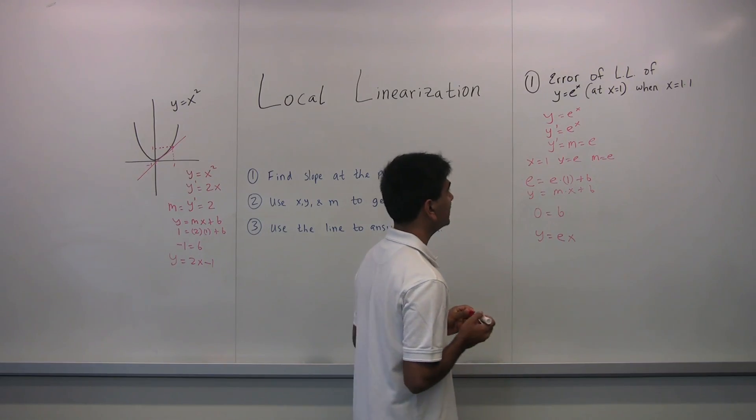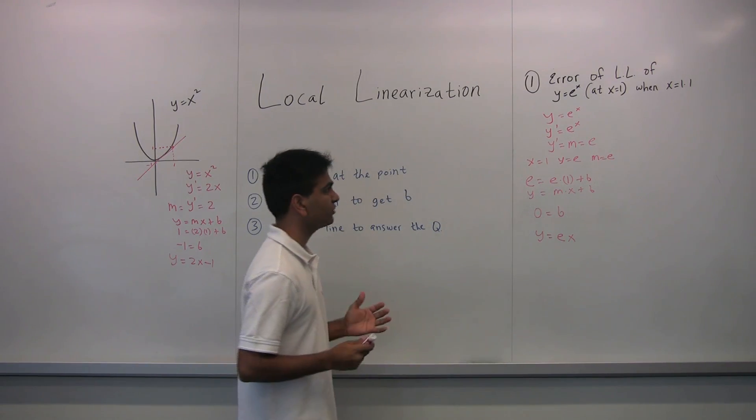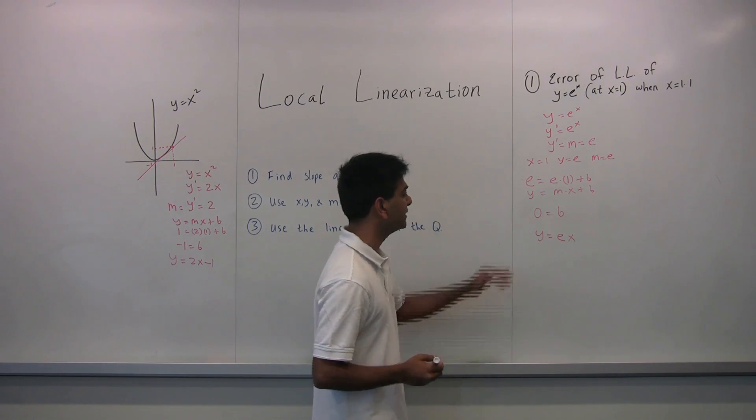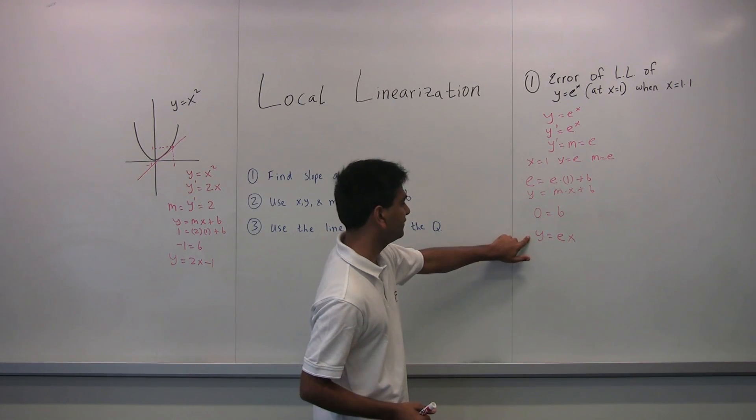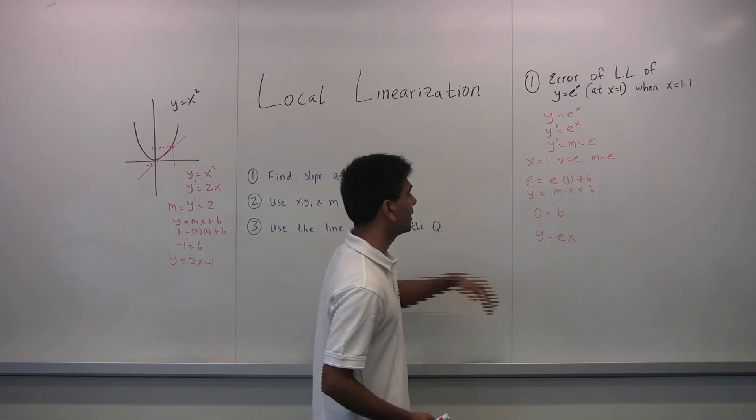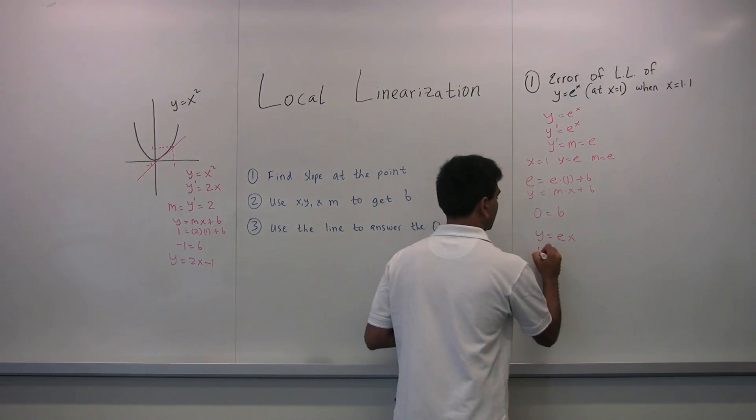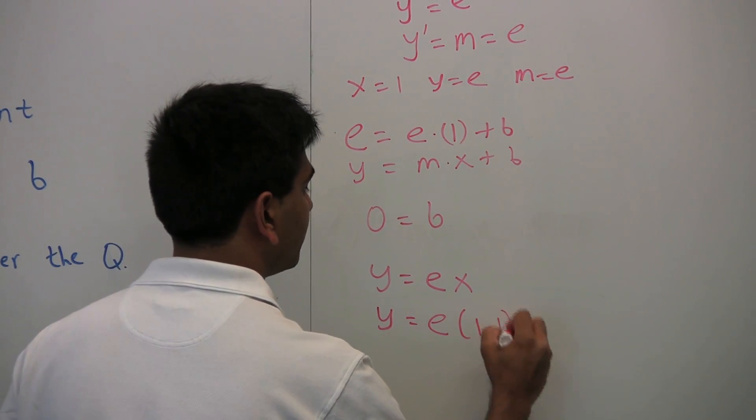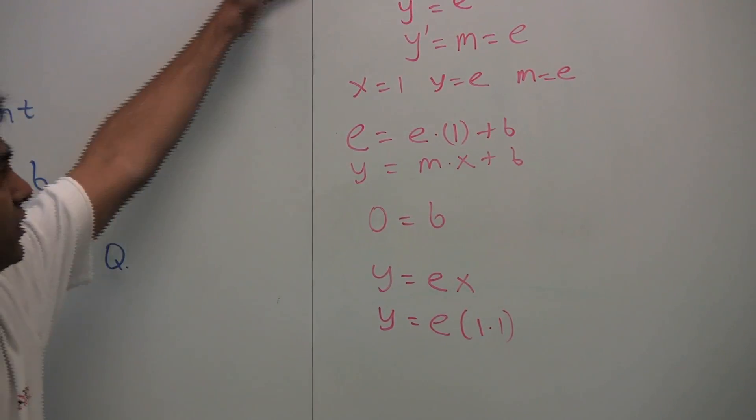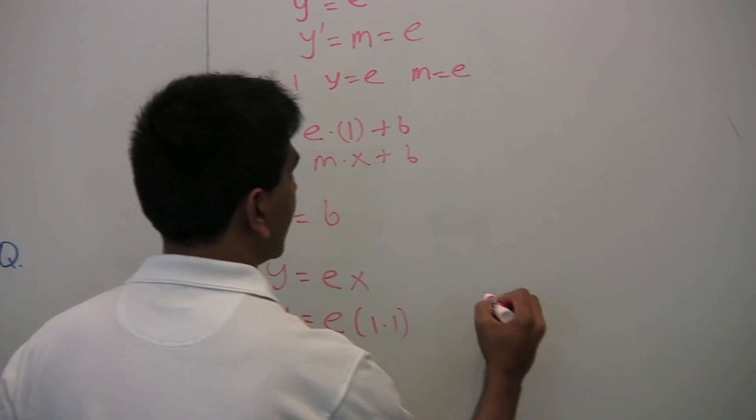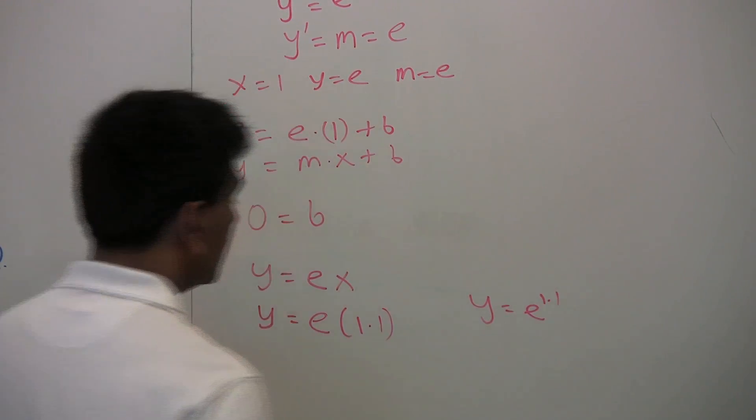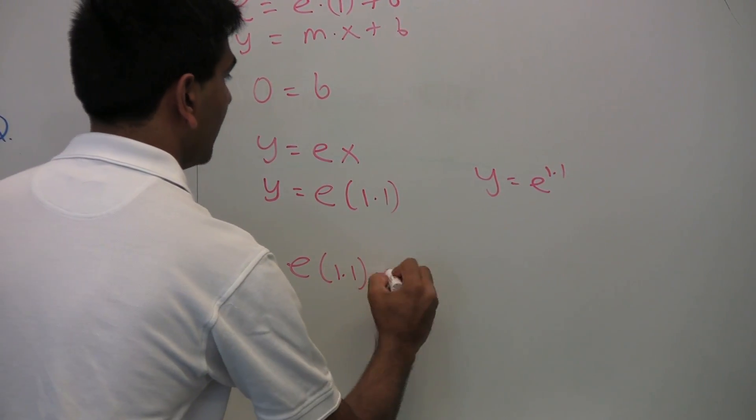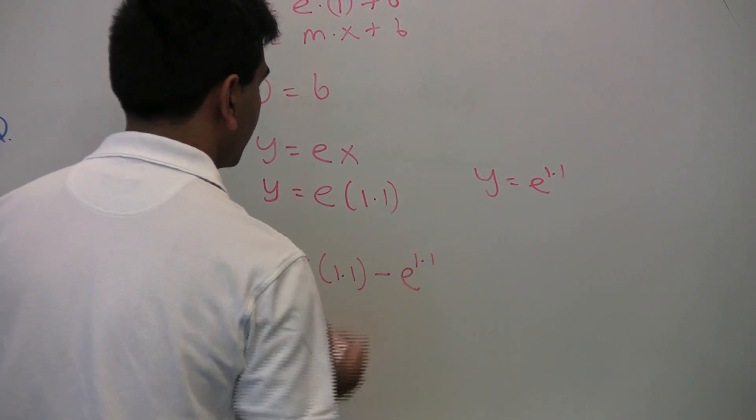Now that we have our local linearization, we can use that to answer the question. So the question is, what is the error? So that's just really asking you the difference between the actual function and the line. Don't let this confuse you. This is just a line. So what is the value of the line when x is 1.1? Well, we'll just plug in 1.1 for x, e times 1.1. And what is the value of the original function at x equals 1.1? Well, that is y equals e to the 1.1. So the error is just the difference between these two, which is e times 1.1 minus e to the 1.1. This is the error.